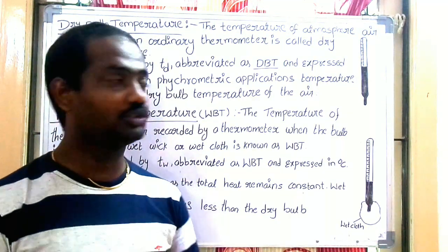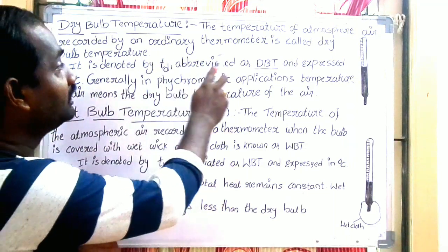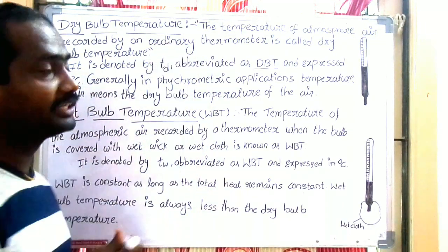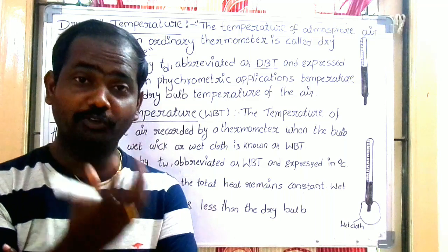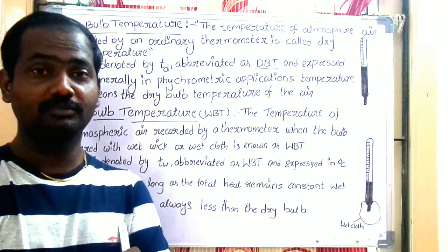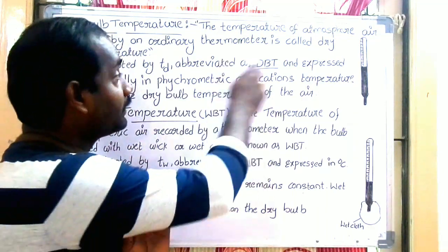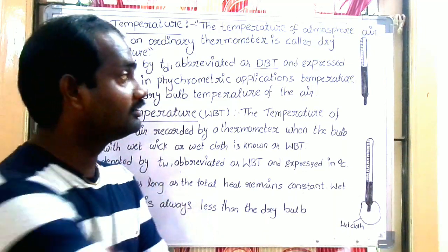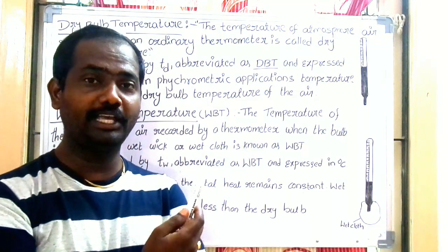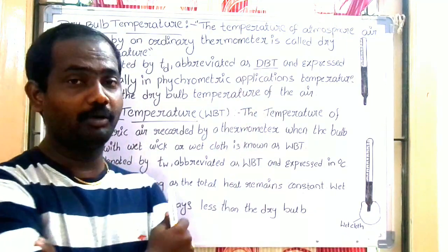Dry Bulb Temperature — the definition: the temperature of an atmosphere, or air, recorded by an ordinary thermometer is called Dry Bulb Temperature. Just like a thermometer placed in the atmospheric area — the temperature it records is the Dry Bulb Temperature.